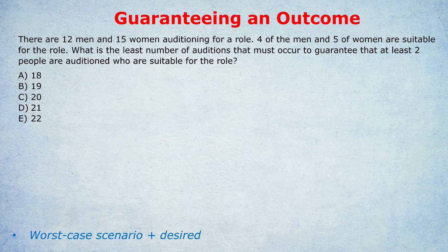This is quite a rare question type, seen only at the higher ends of the GMAT and the GRE. Please feel free to pause the video, think about what you would do first, and see if it aligns with my recommendations. What we have to do to guarantee an outcome is think of the worst case scenario — the absolute worst case — and then add on the number of desired people or objects we want. To guarantee an outcome, it has to work even in the worst possible circumstances.